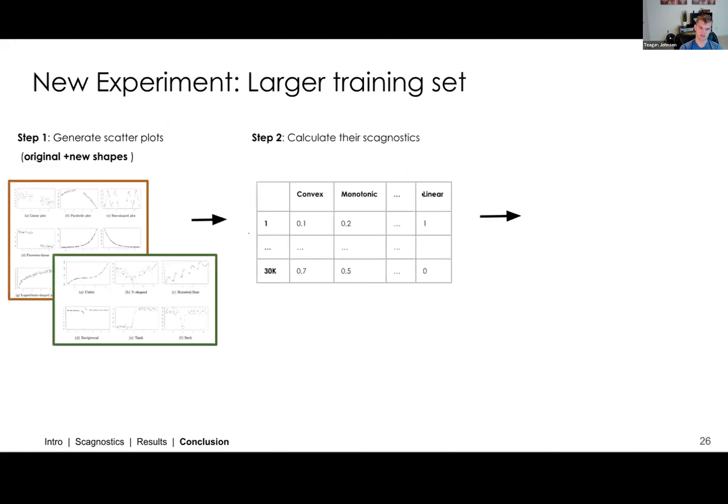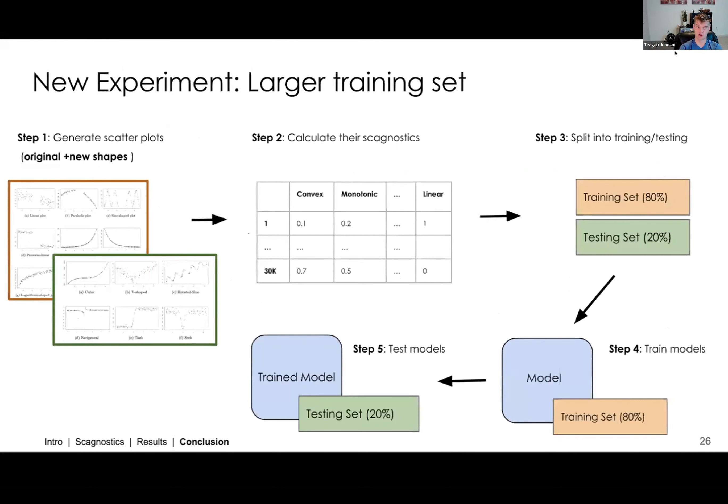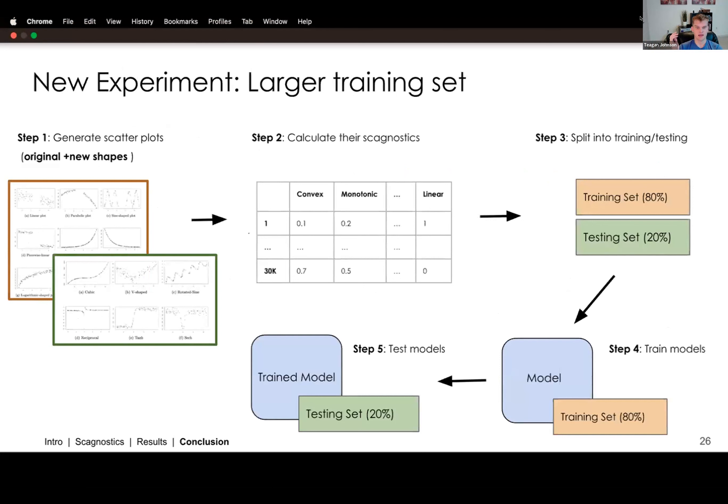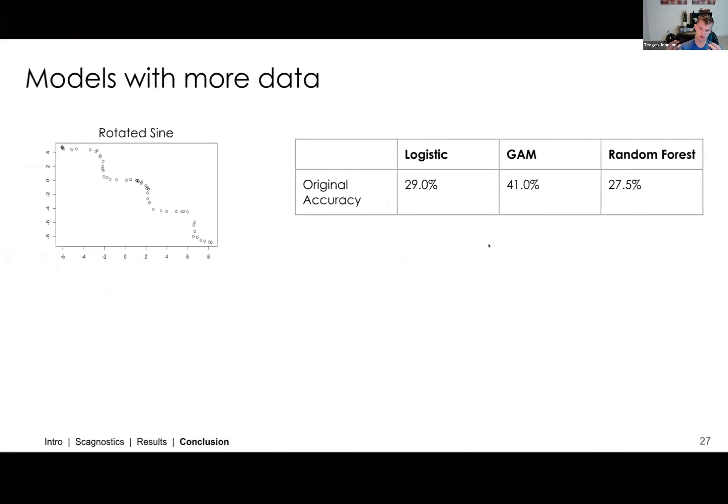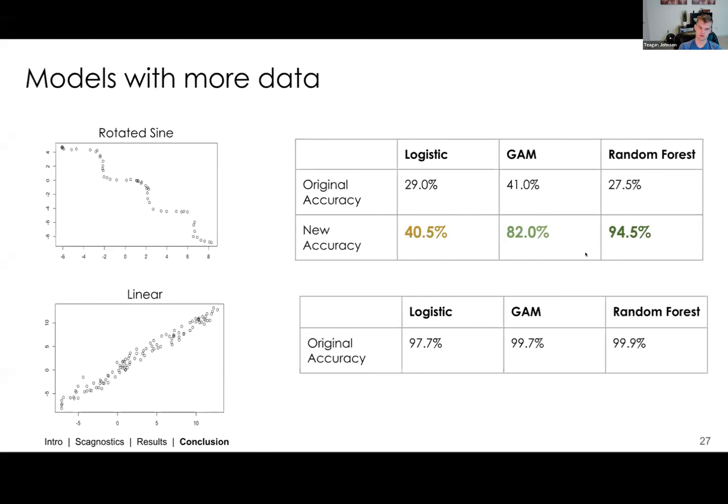And then we got the scagnostics for all of our generated distributions, split it into training and testing, and then basically tested our models on them. So now we're including the additional testing distributions in the training set, and we're going to see how well our models perform. We see in the rotated sine a very significant increase in the random forest and the GAM accuracies. Logistic regression, a small increase, not nearly as high as the GAM or the random forest. But this is very promising for the random forest and the GAM. And then if we look at an original distribution, the linear distribution, we see that there is a very small drop in accuracy, but nothing too concerning. So overall, we are very happy with how the results are after adding these new distributions to the training data set.